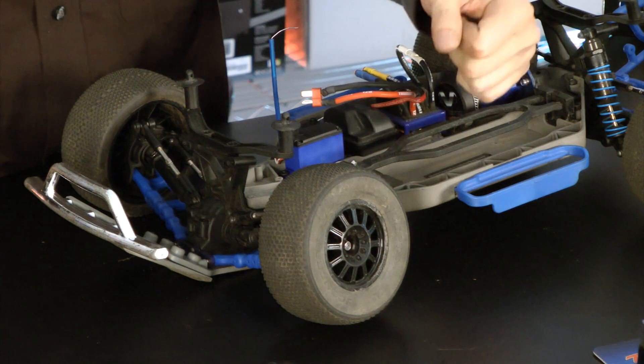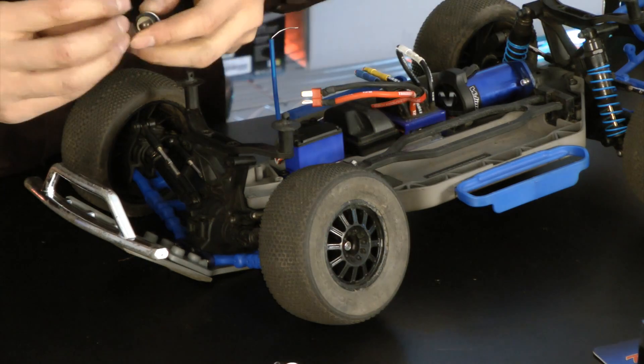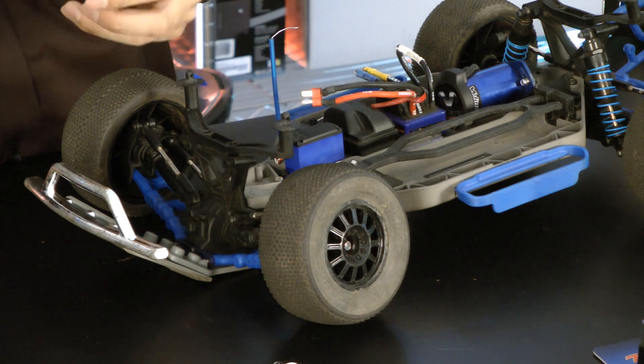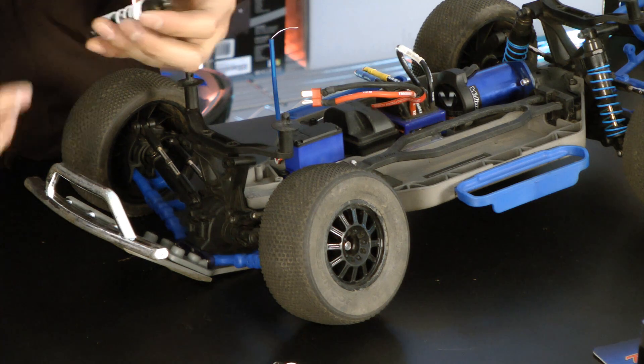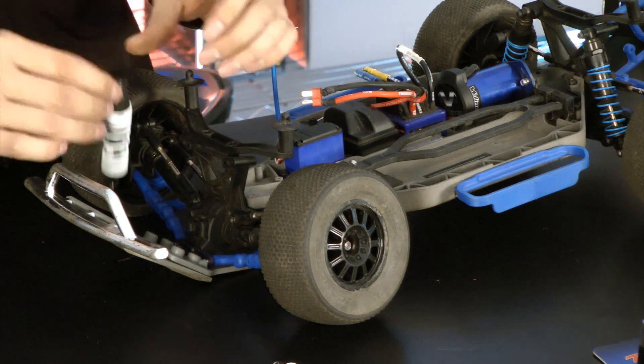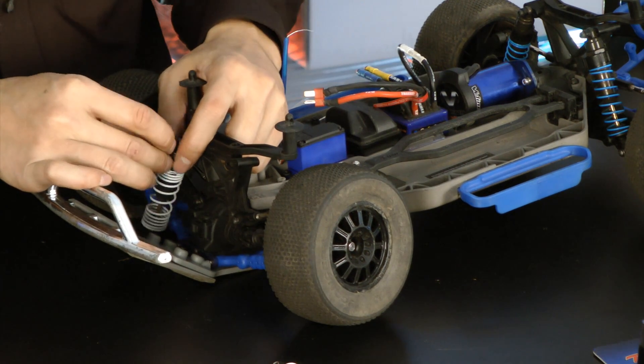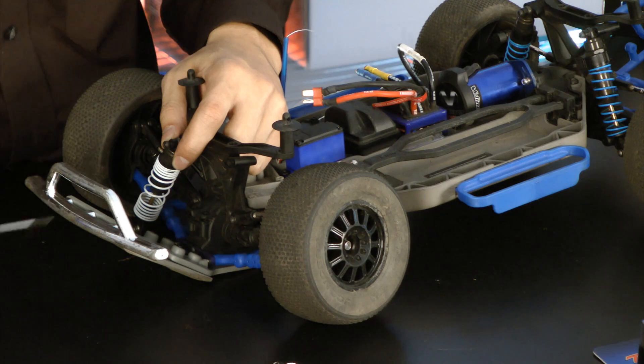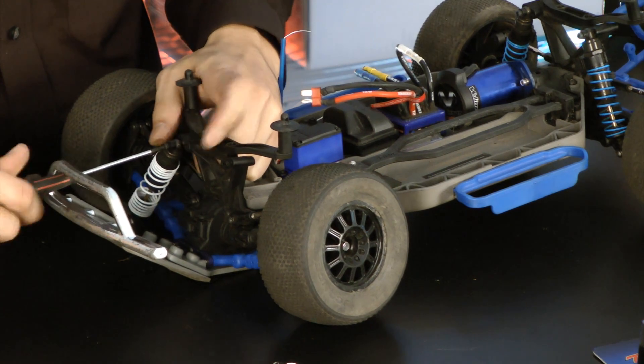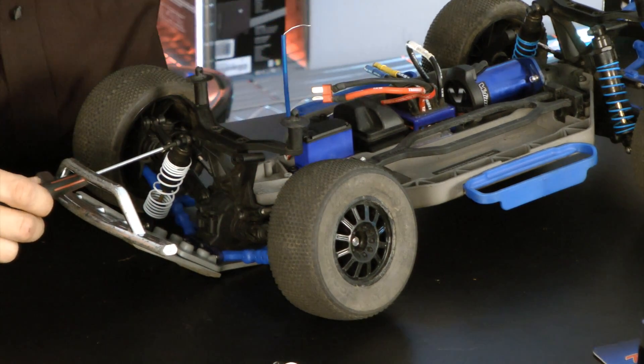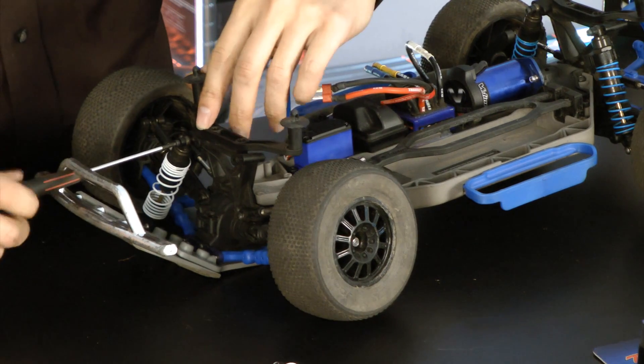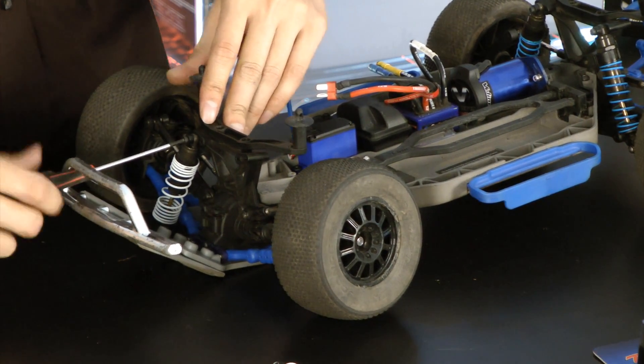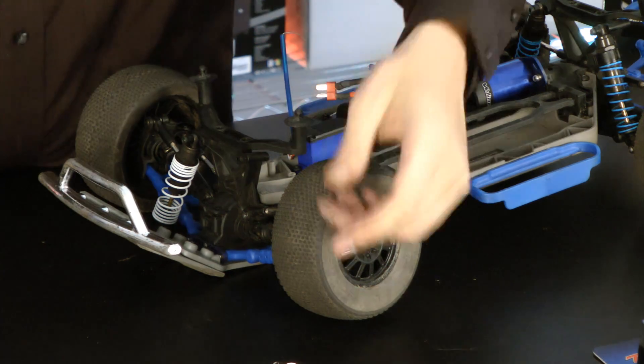So let's go ahead and install the big bores in place. Now when removing the shocks, make note of which mounting positions the shocks were on, on the shock tower and on the A-arm. This way you can put the replacement shocks in the same location.